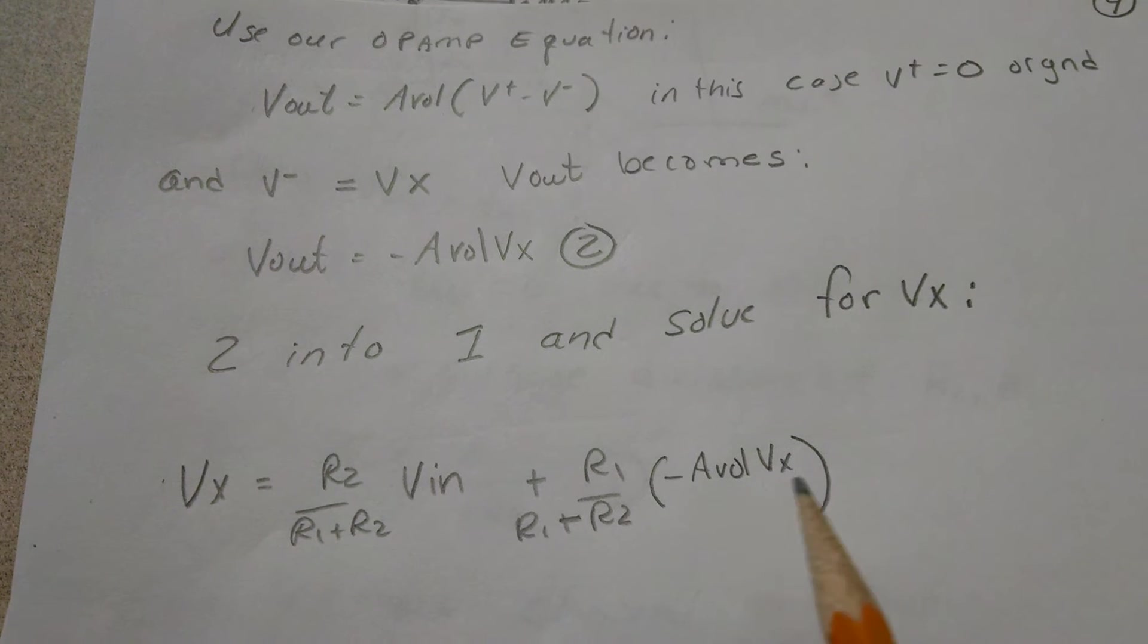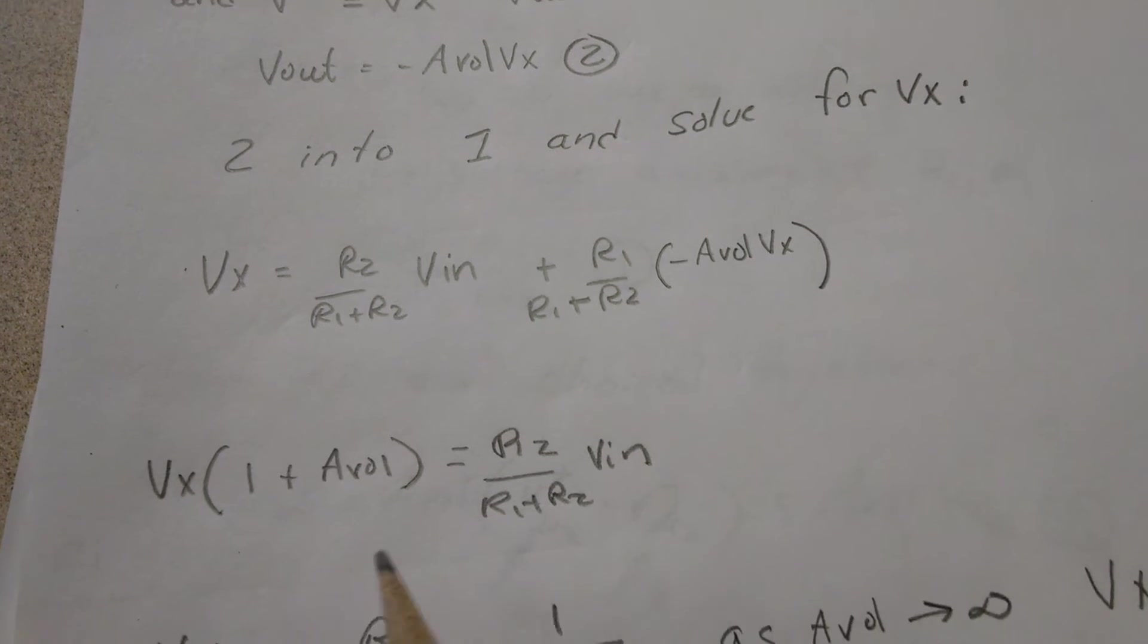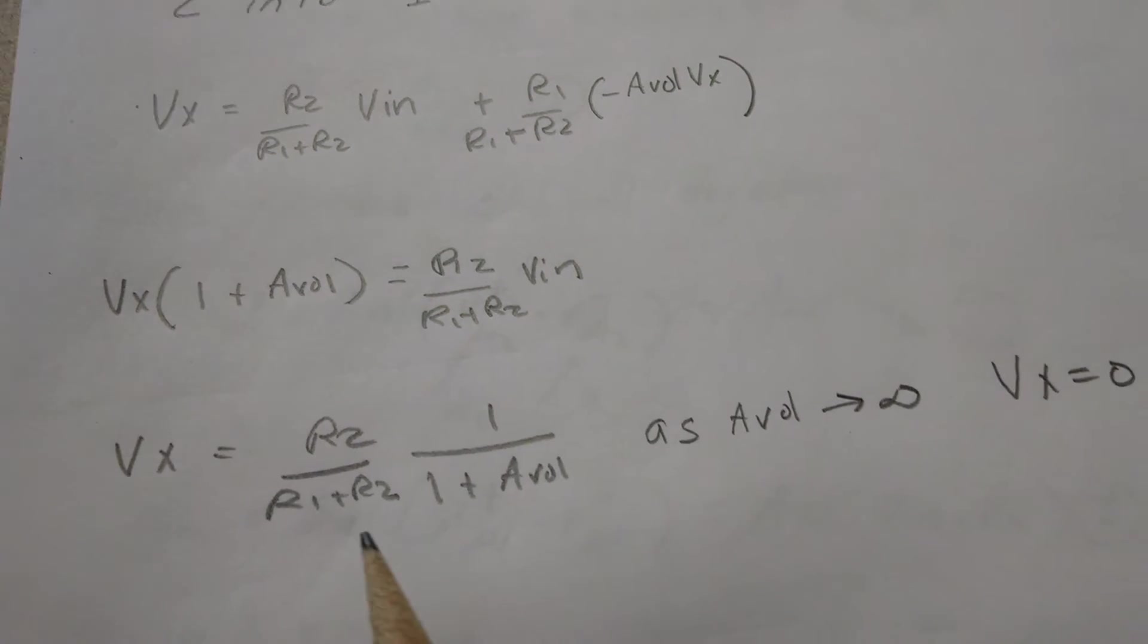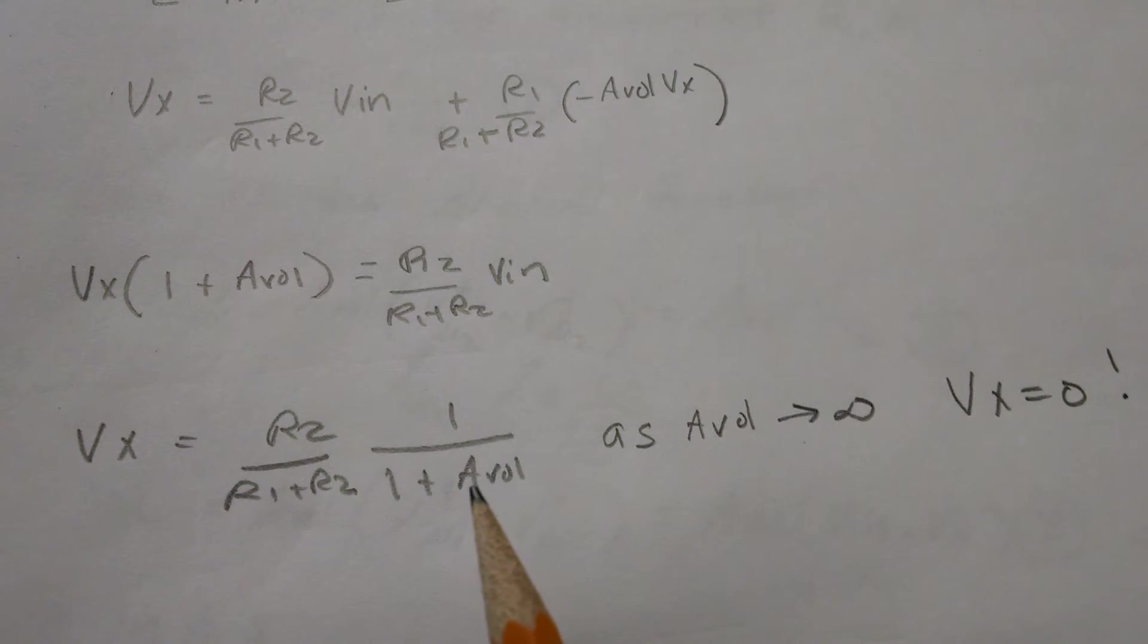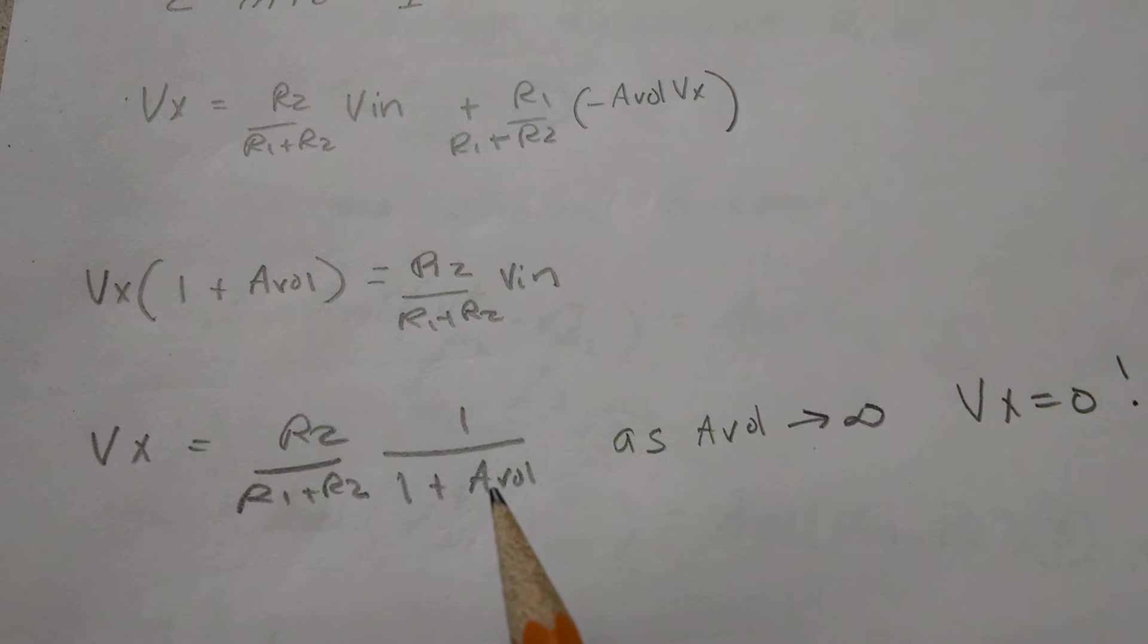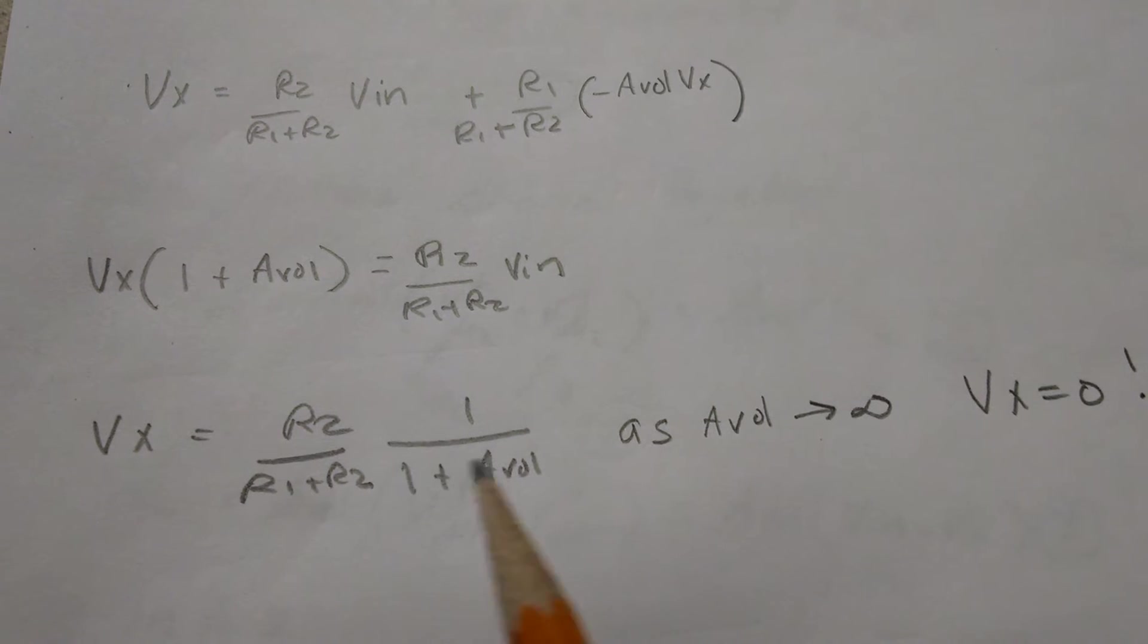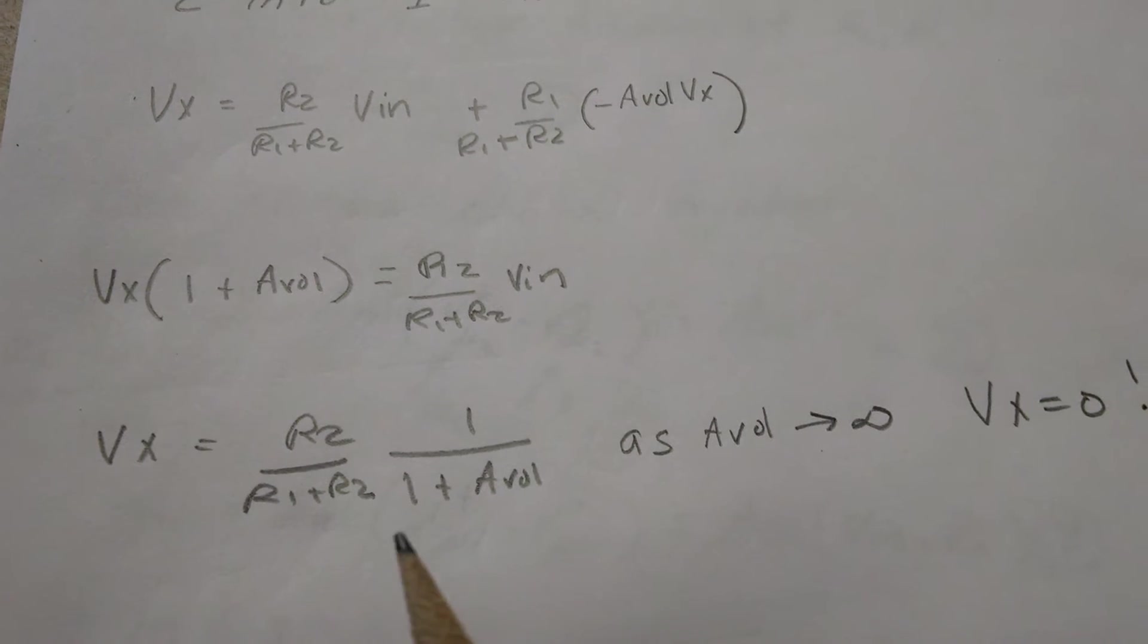And we get and solve for Vx. Well, if I let the open-loop gain go to infinity, this whole term goes to zero, so Vx equals zero.